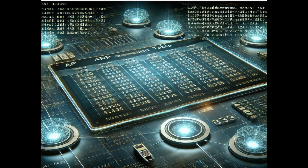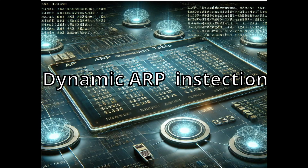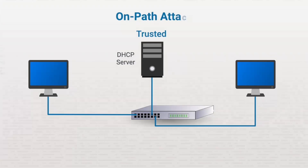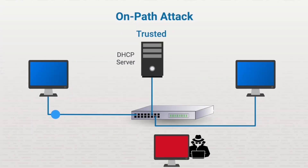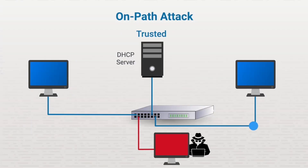Another security feature available on many switches is called dynamic ARP inspection. This feature rejects invalid or malicious ARP packets, which can help prevent on-path attacks. An on-path attack is when an attacker secretly relays or alters the communication between two parties who believe they're directly communicating with each other.